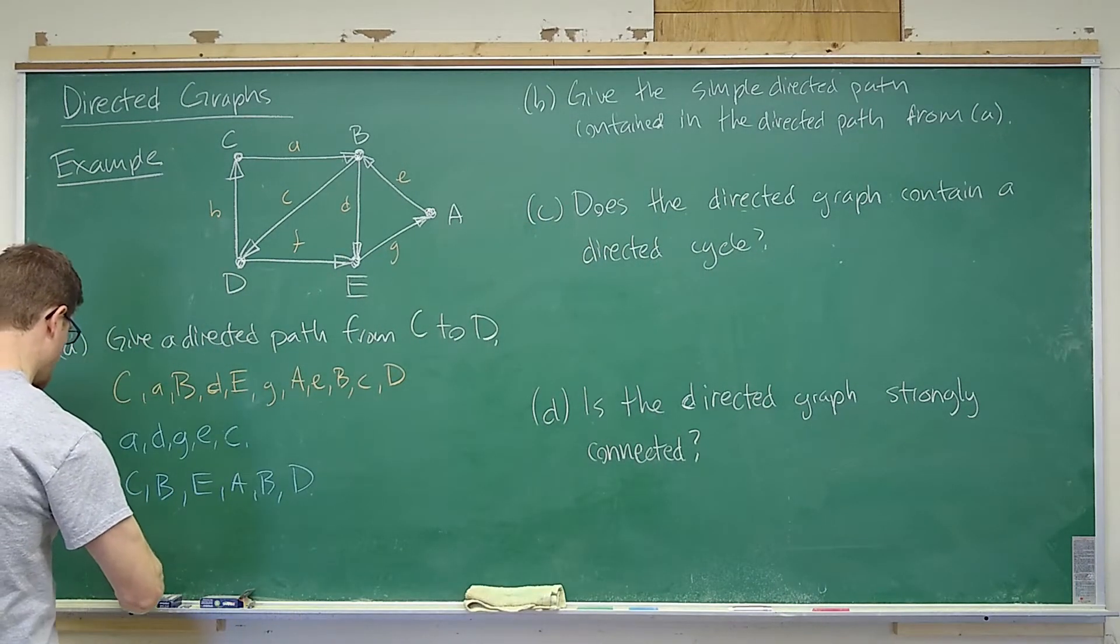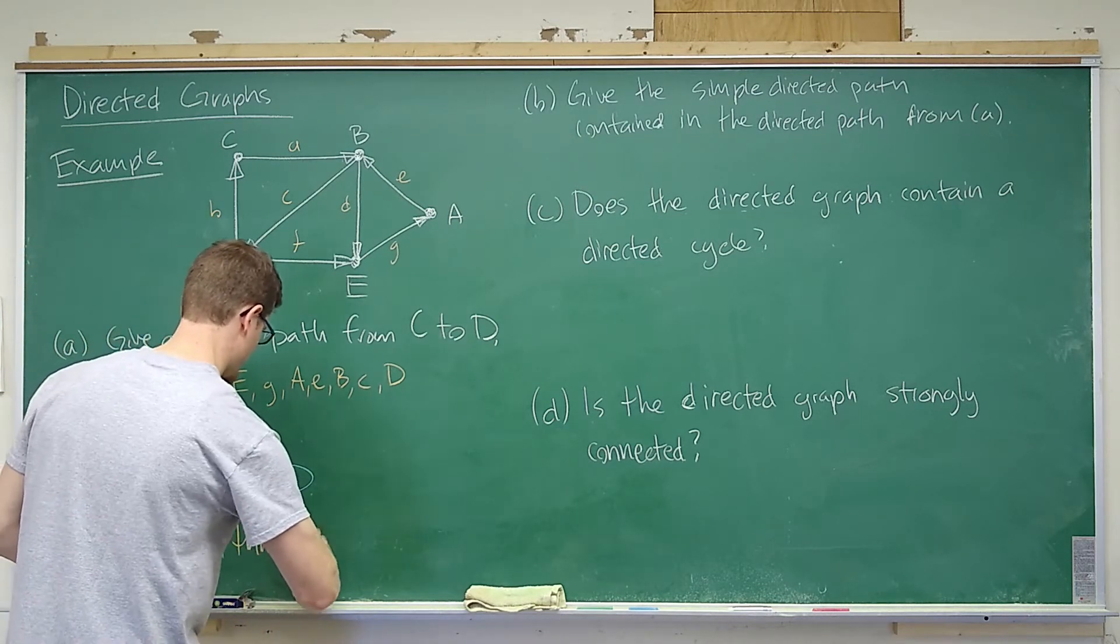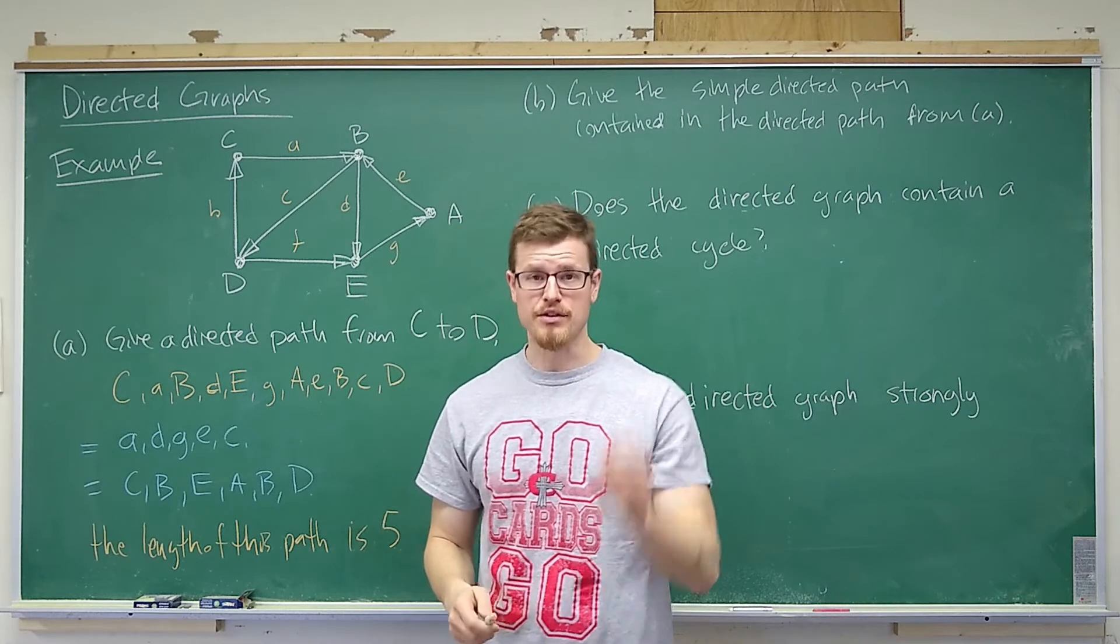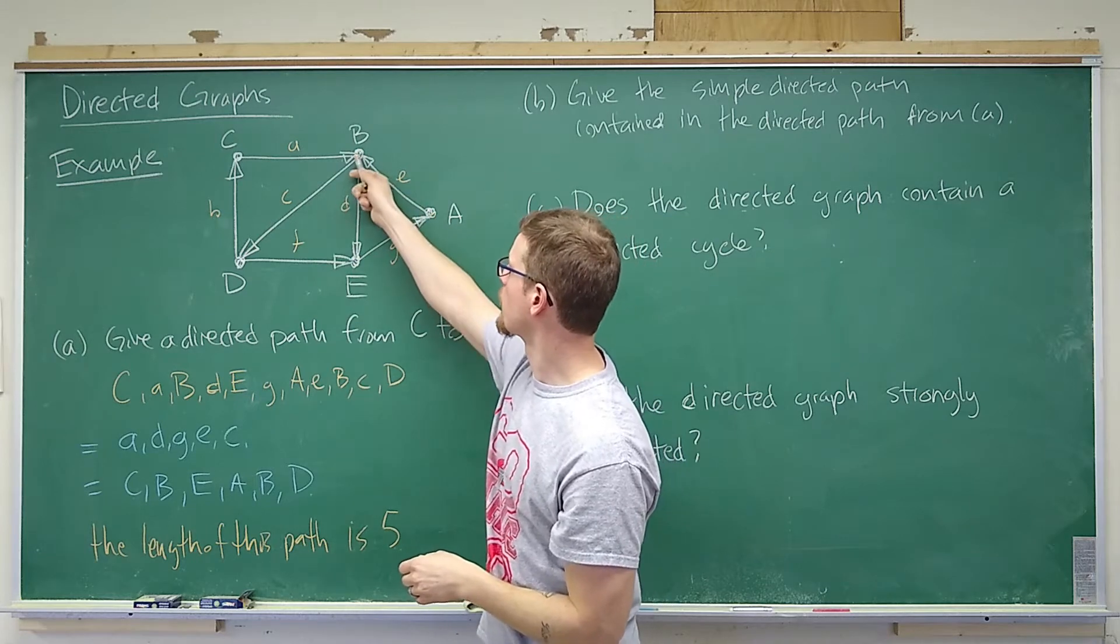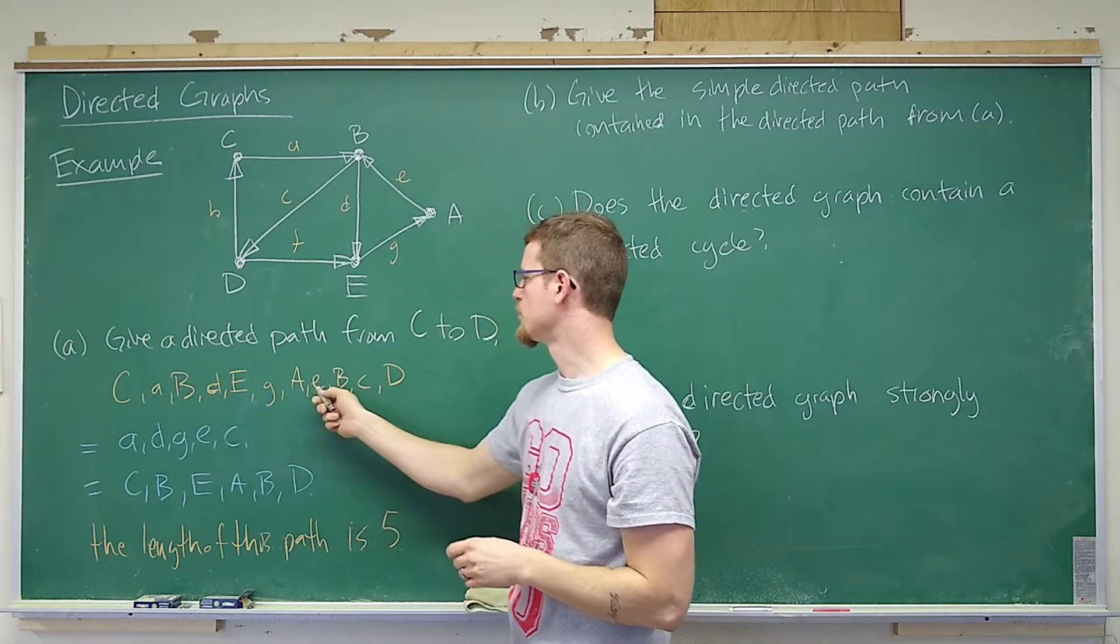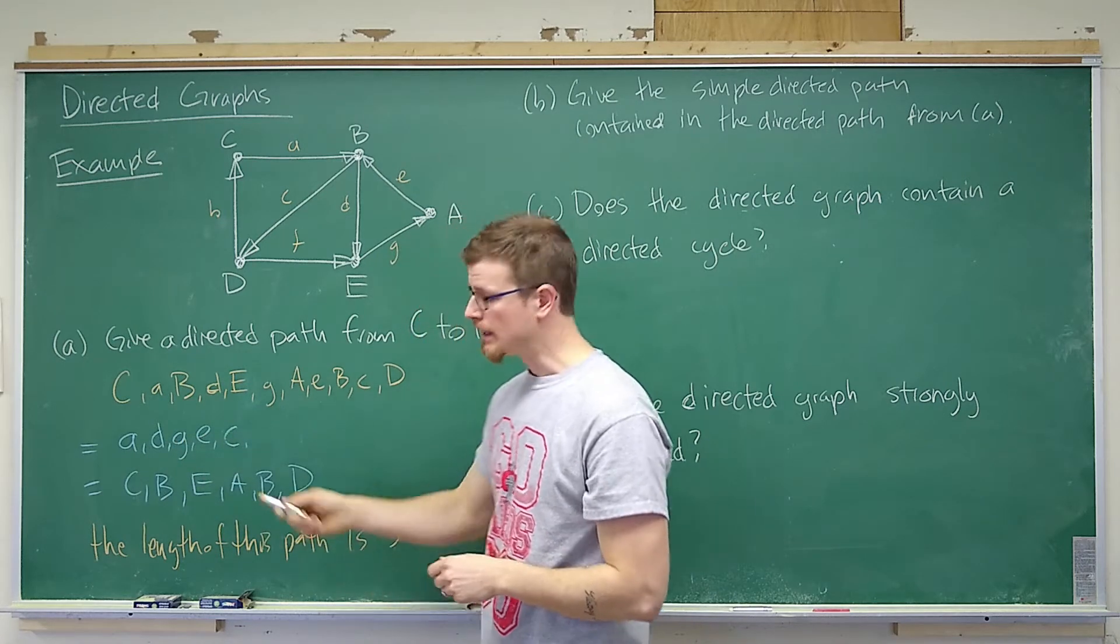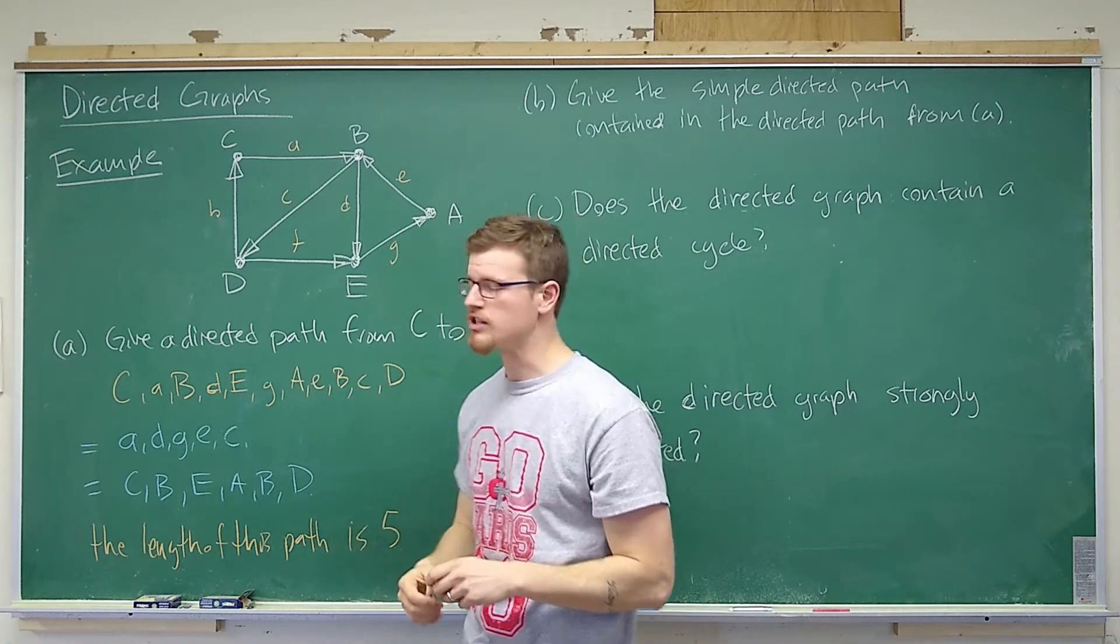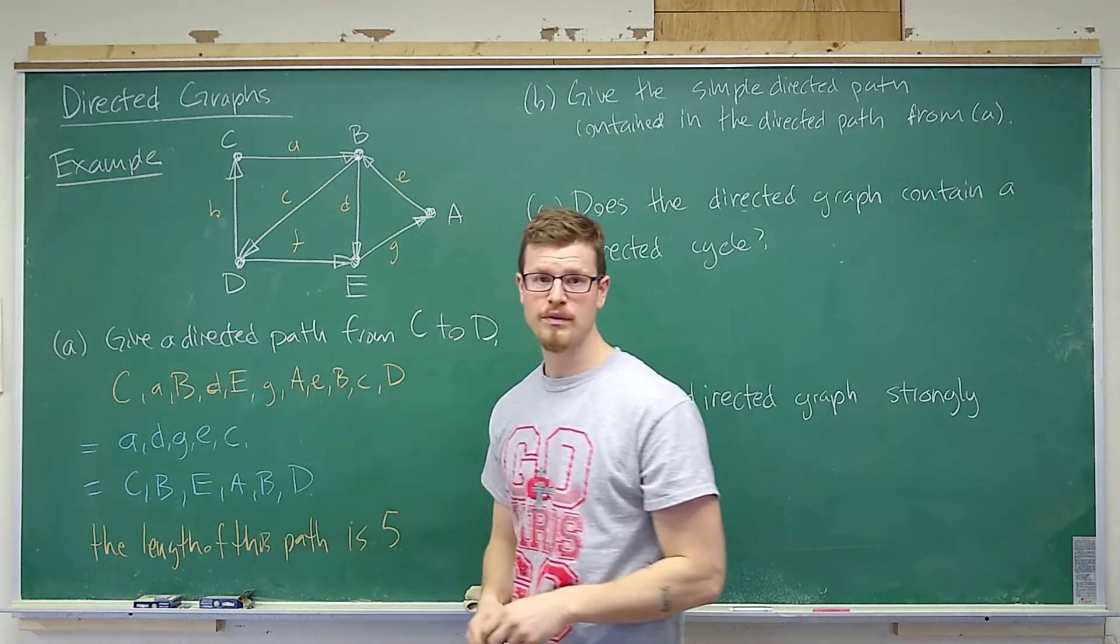So the length of this path is 5, because it travels 5 edges. 1, 2, 3, 4, 5 edges to get from C to D. Here, it's maybe not quite so obvious. What you need to recognize is that there is an edge between each vertex. So counting the spaces, or the commas, we have 1, 2, 3, 4, 5.